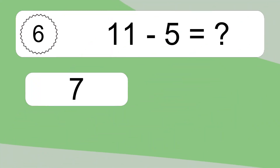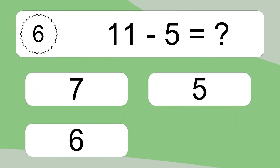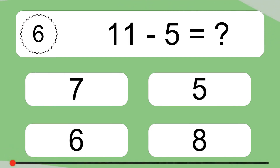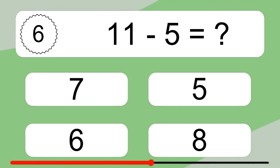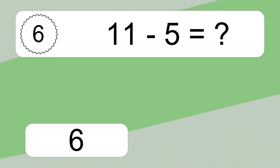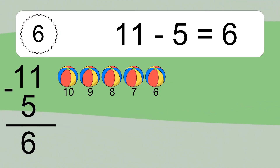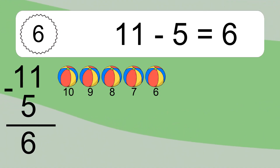11 minus 5 equals what? 11 minus 5 equals 6. Let's count it: 10, 9, 8, 7, 6.